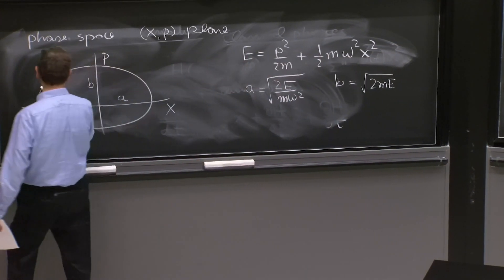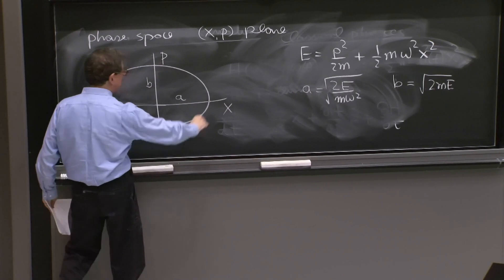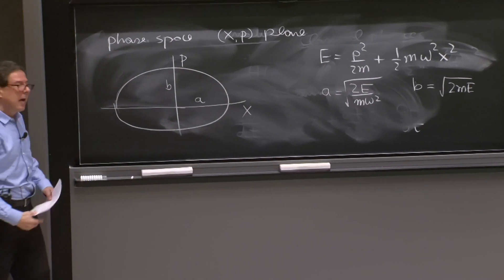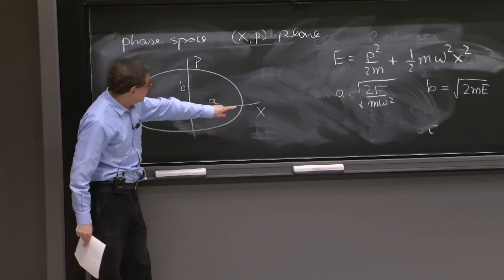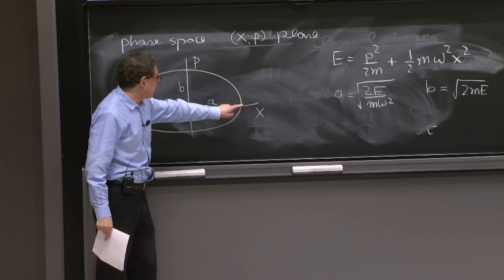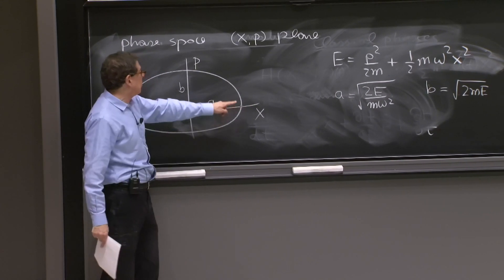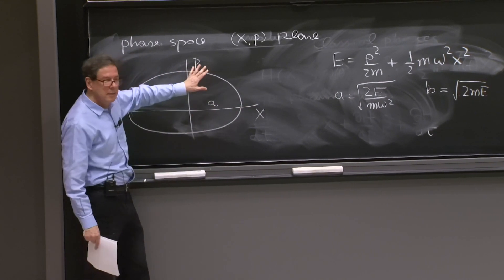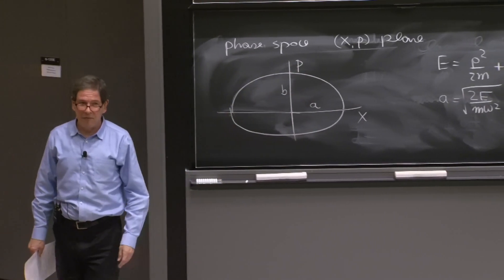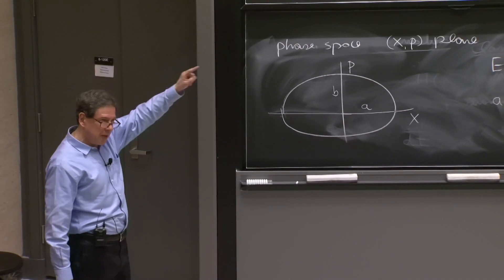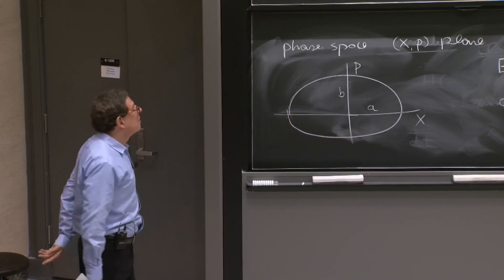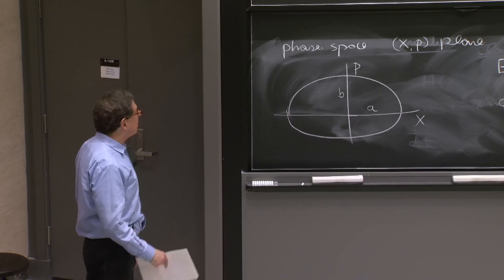And here is the particle doing this motion in this orbit. As time goes by, the position x goes from a maximum to a minimum and return with the momentum going like that. It's a nice representation of the physical motion as moving on the ellipse. That's what the system is doing.